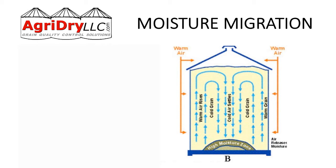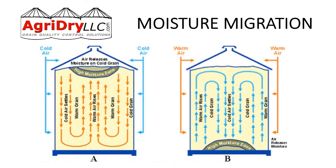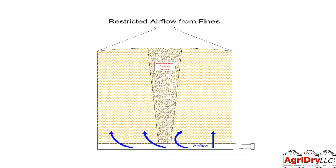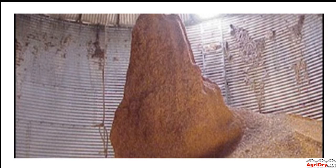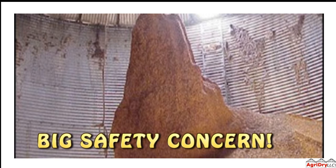In a springtime scenario, you've got cold grain in the middle and warmer air on the outside. Warm air rises and cool air sinks — as that cool air sinks down, it loses its moisture-holding capacity and drops moisture right in the center, plugging your sump. Now imagine moisture migration combined with a big core of fines in the center of the bin. You can't get air to it, you're having moisture migration, and you can't change the temperature inside. That's what happens — this is what this producer had to deal with: moisture migration plus a big core of fines in the center equals a huge safety and quality concern.